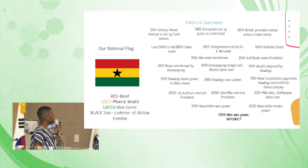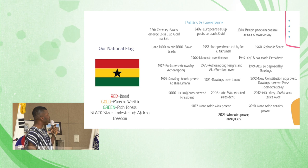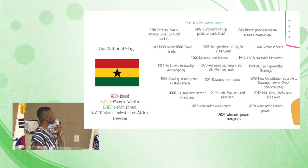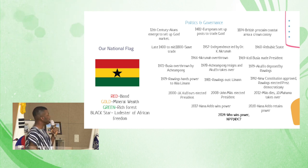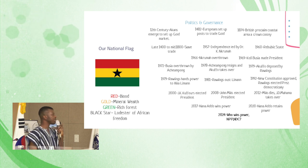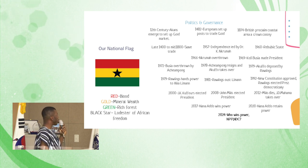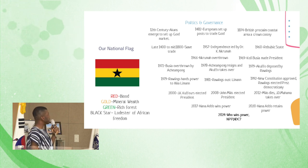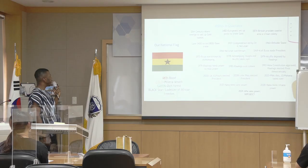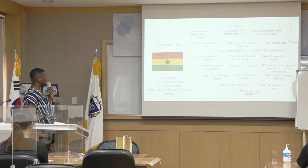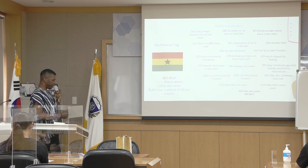Another point of interest is our national flag. We have the red, gold, and green, and also the black star. Red represents the blood shed by our forefathers, gold represents our minerals, green represents the rich culture, and the black star represents Africa in general.